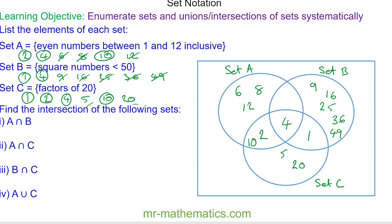Can you try to find the intersection of the following sets? A intersecting with B, A intersecting with C, B intersecting with C, and A in union with C. Do you want to pause the video and resume it when you're ready.